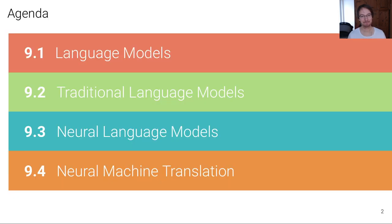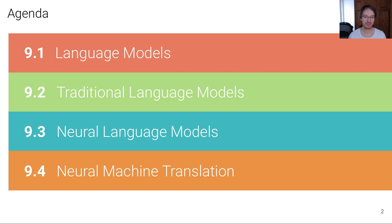This lecture is structured into four units. In the first unit we're going to introduce what a language model is and show some examples. In the second unit we're going to talk about traditional language models as they were used in the 70s, 80s, and 90s. Then in the third unit we're going to talk about the more modern reincarnation of these models, which are neural language models that use neural networks. And in the fourth unit we're going to talk about a particularly important application of these language models, which is machine translation.